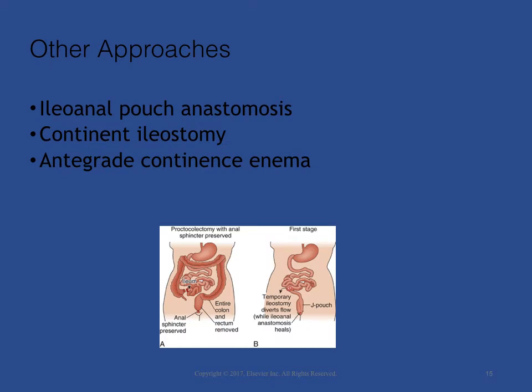Other approaches: The ileoanal pouch anastomosis is a surgical procedure used in patients who need a colectomy for treatment of ulcerative colitis or familial adenomatous polyposis. The surgeon removes the colon, creates a pouch from the end of the small intestine, and attaches it to the patient's anus. A continent ileostomy involves creating a pouch from the small intestine; though rarely done now, there are still patients who had this procedure in the past. The pouch has a continent stoma on the abdomen with a valve that can be drained only when the patient places a large catheter into the stoma.